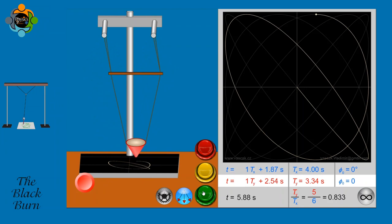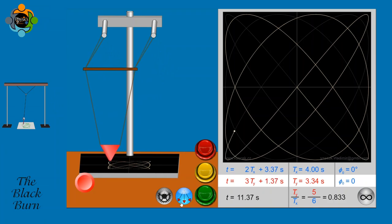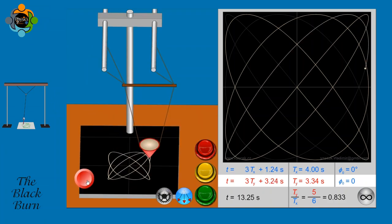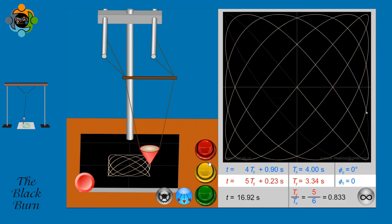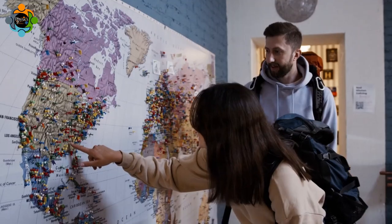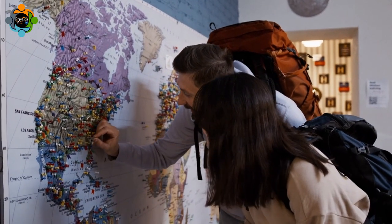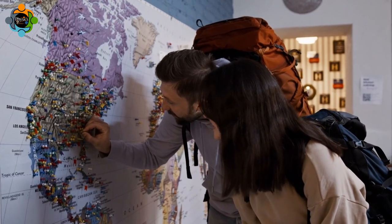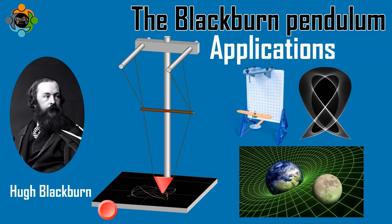By carefully observing the pendulum's movements, scientists can calculate the gravitational acceleration in a specific location, providing valuable data for various research purposes. The precision and reliability of the Blackburn pendulum make it an essential tool for gravitational studies and geophysical research.